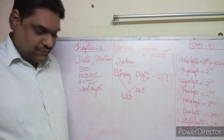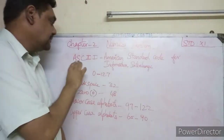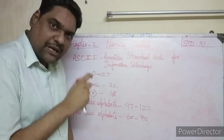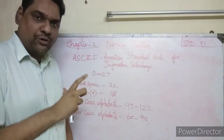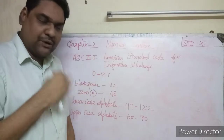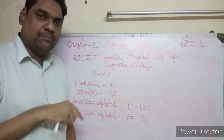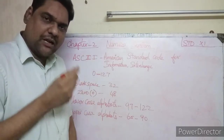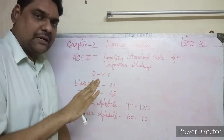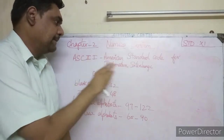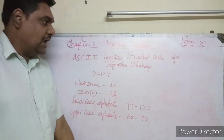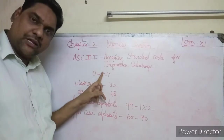Now let us see ASCII — American Standard Code for Information Interchange. This is the world's accepted standard code. Every key on the keyboard has a fixed ASCII value. Since the computer cannot store characters directly, each key is assigned a numeric code value. ASCII code values range from 0 to 127.